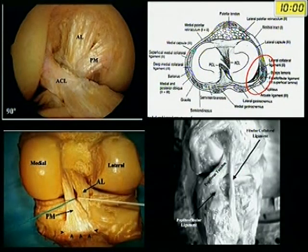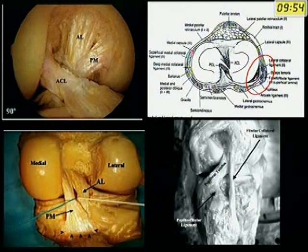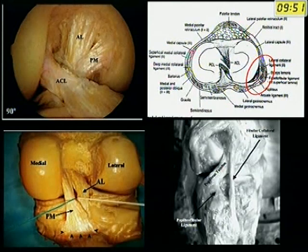PCL is the stronger and bigger of the two cruciate ligaments in the knee. It is attached on the anterosuperior aspect of the medial femoral condyle, goes back and attaches to the facet between the two condyles of the tibia.